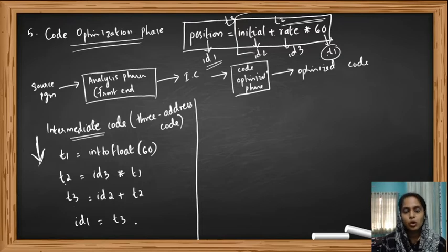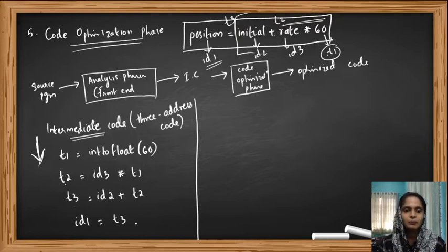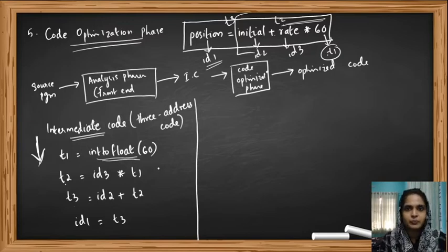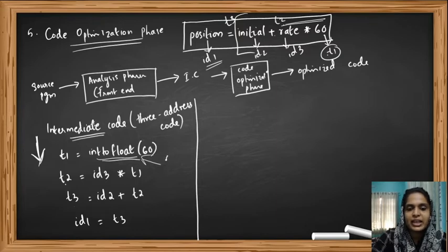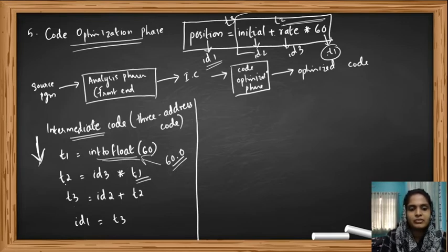Now we perform code optimization — making the code better in the sense of fewer lines, less power, or less memory. Instead of using the int_to_float conversion, we can directly give the value 60 as a decimal floating-point value 60.0. If we write 60 as 60.0, we do not need the int_to_float conversion. So T1 can be written directly as 60.0, since int_to_float(60) equals 60.0.